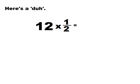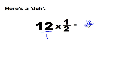Well, let's take a look at it this way. Here's a 'duh' moment. If I want to multiply 12 times 1 half, I don't think you're going to be too shocked at the answer. We're going to put our 12 over 1. 12 times 1 is 12, 1 times 2 is 2, and 12 divided by 2 is 6. I multiplied and I got a smaller number.